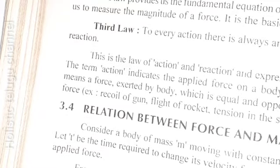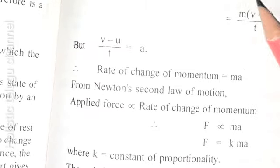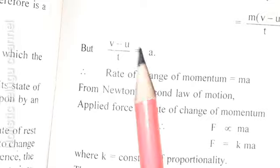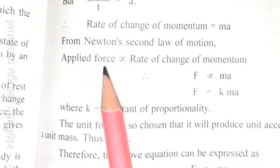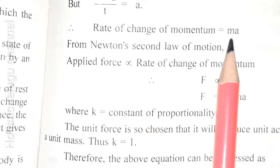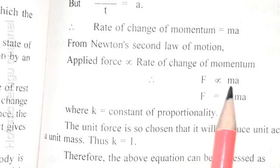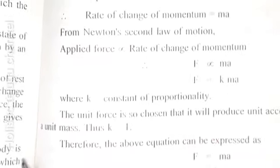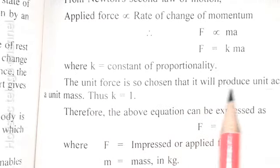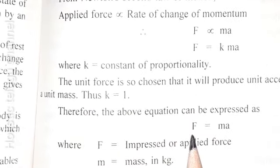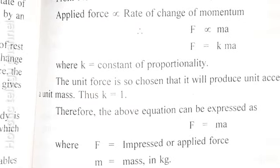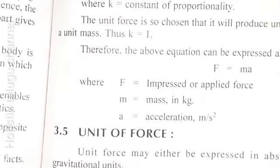So the initial momentum is mu and the final momentum is mv. Rate of change of momentum equals mv minus mu divided by t, and m times v minus u divided by t equals acceleration a. So the rate of change of momentum equals ma. When k equals 1, F equals ma, where F is the applied force, m is the mass in kgs, and a is the acceleration in meters per second squared.